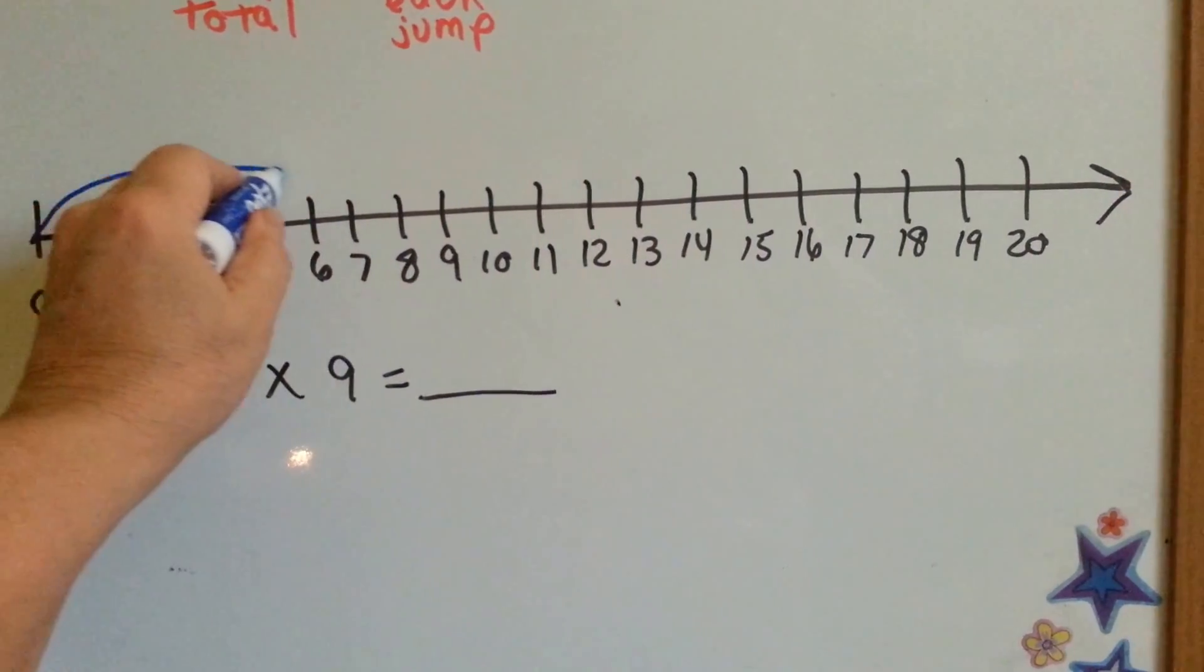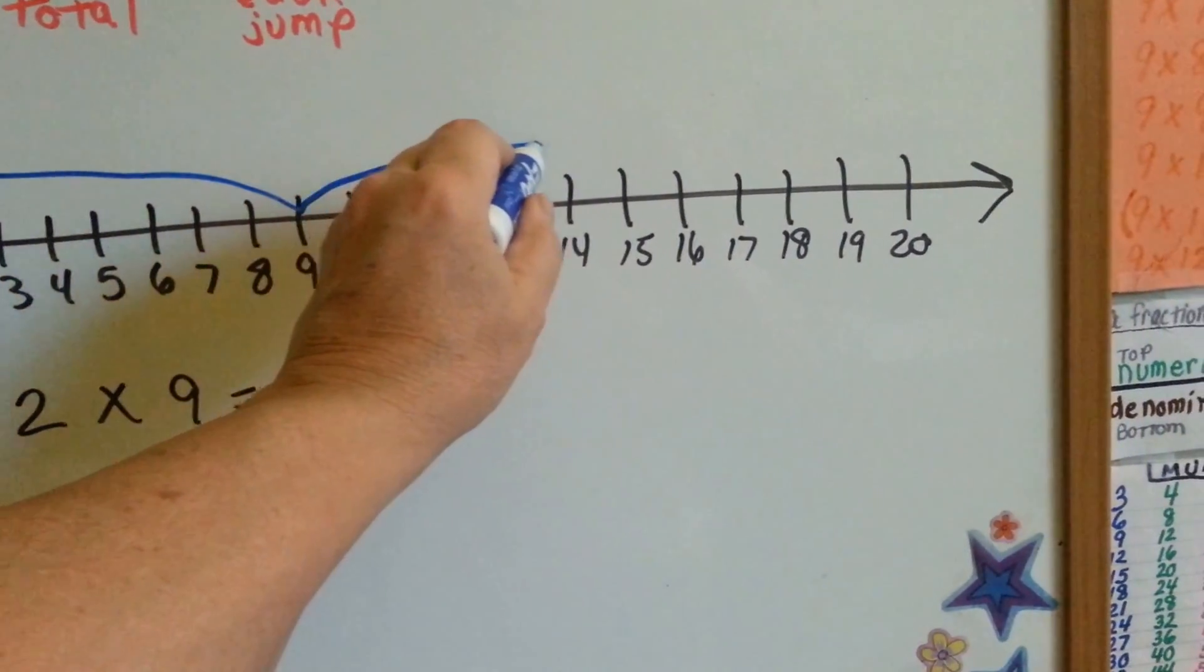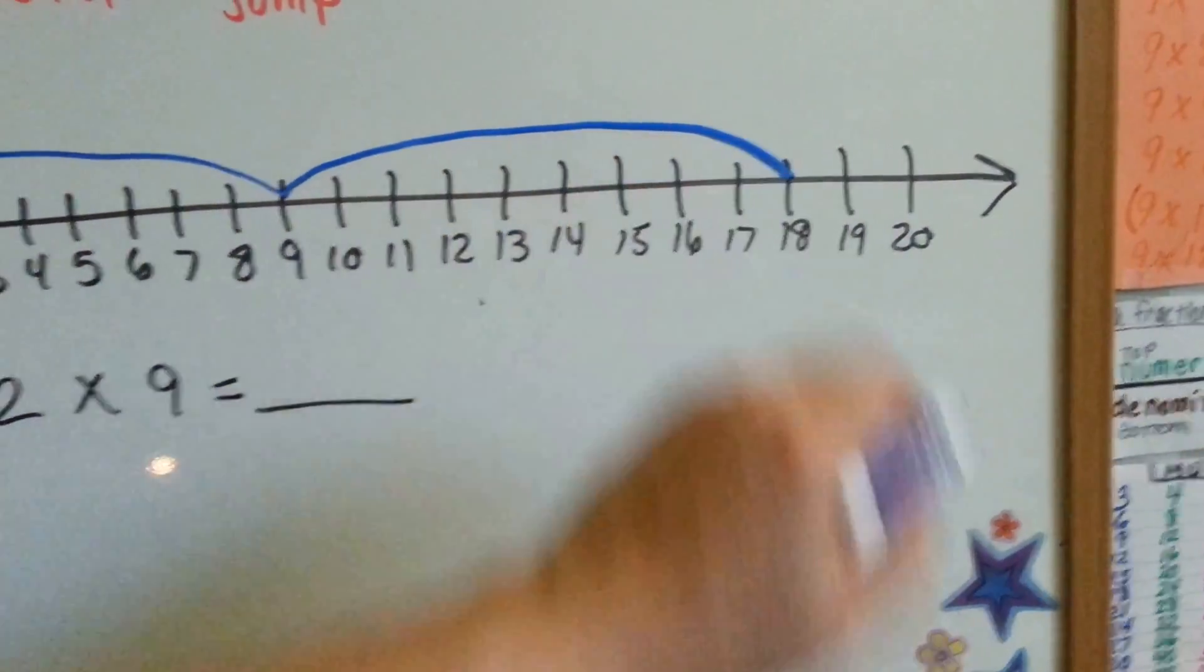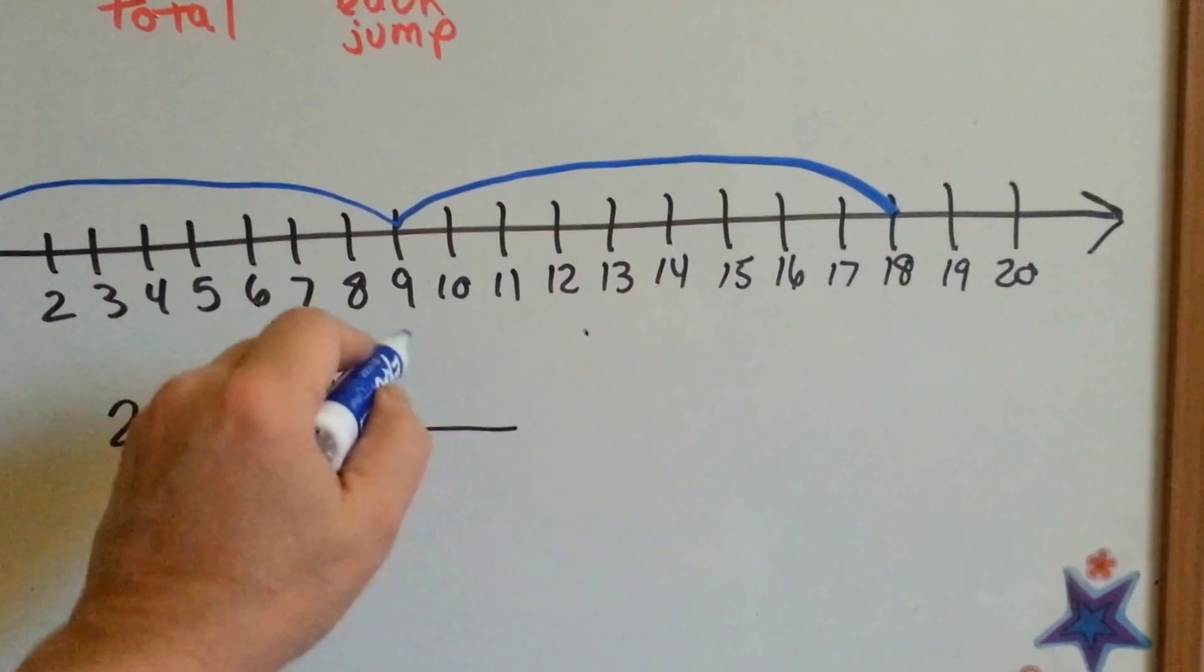1, 2, 3, 4, 5, 6, 7, 8, 9. 1, 2, 3, 4, 5, 6, 7, 8, 9. 2 times 9 is 18.